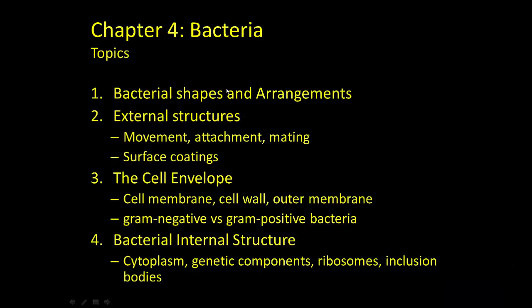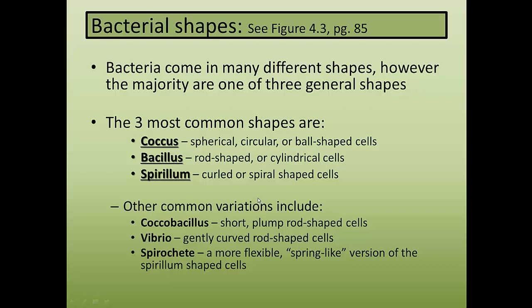We're going to start with shapes and arrangements, then look at external structures, moving from the outside toward the inside. The cell envelope is kind of in between — this includes things like the membrane, the cell wall, and in some microbes an outer membrane. This will allow us to differentiate two major groups: gram-negative and gram-positive bacteria. Finally, we'll look at internal structures including genetic components.